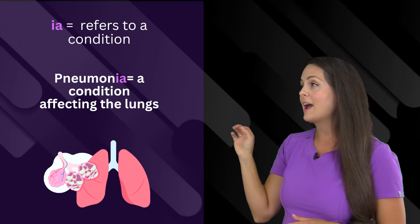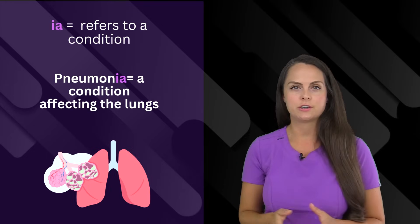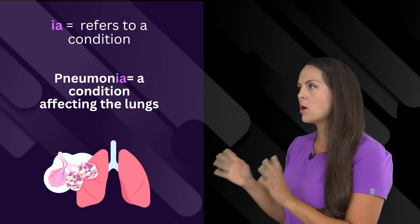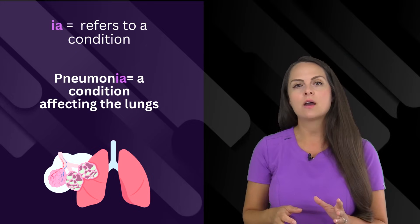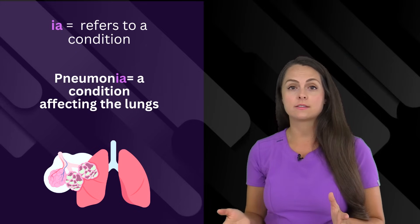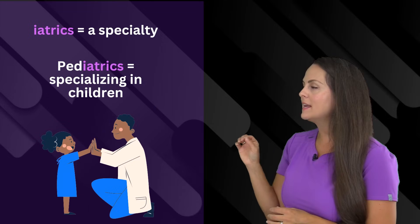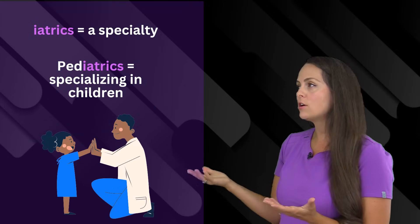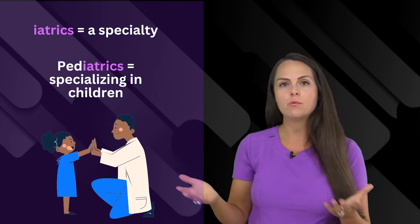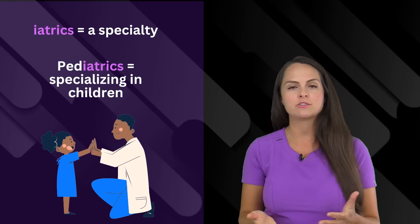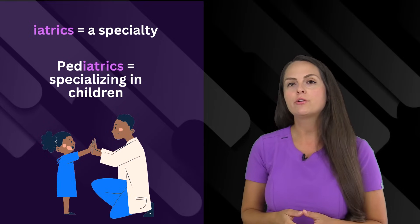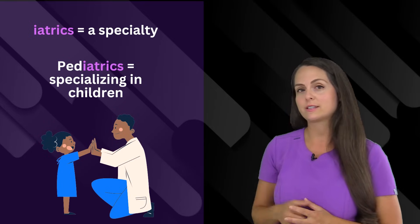Next is a suffix ia. And this refers to a condition. For example, with the word pneumonia, see that ia at the end, this means that we're referring to a condition that affects the lungs. Then we have iatrics. And this is just talking about a specialty. So if you want to go into a specialty where you take care of children, you're going to enter into the field known as pediatrics.